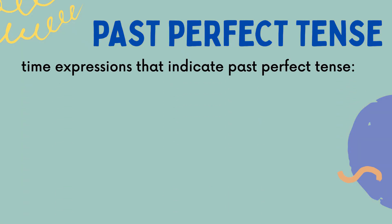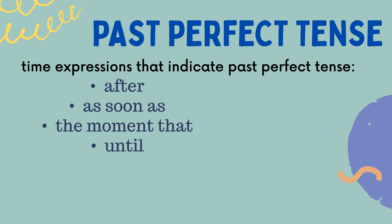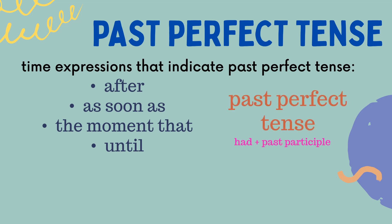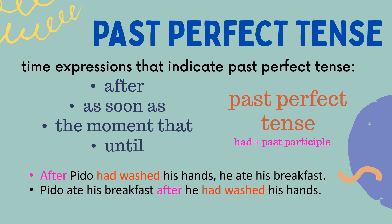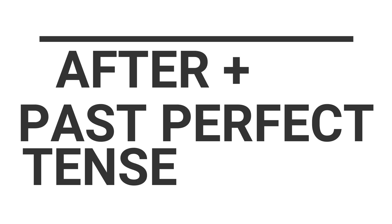There are time expressions used in indicating Past Perfect Tense. The time expressions 'after,' 'as soon as,' 'the moment that,' and 'until' are used before the Past Perfect Tense. Example: 'After Pido had washed his hands, he ate his breakfast.' In this sentence, we use the time expression 'after,' so it should be followed by the Past Perfect Tense, which is 'had washed.'